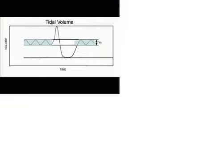The tidal volume is the amount of gas an individual inspires or expires during normal, quiet breathing. As you sit there breathing normally in and out, that's your tidal volume. Normally that volume is 3 to 4 mLs per pound, or 7 to 9 mLs per kilogram of ideal body weight, which is about 8 to 10% of the total lung capacity.